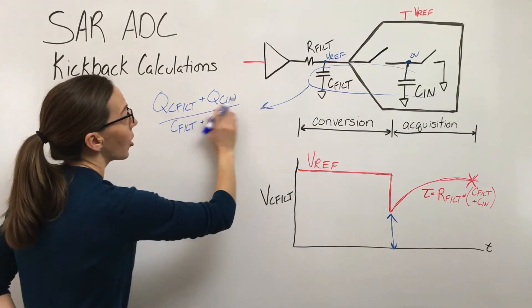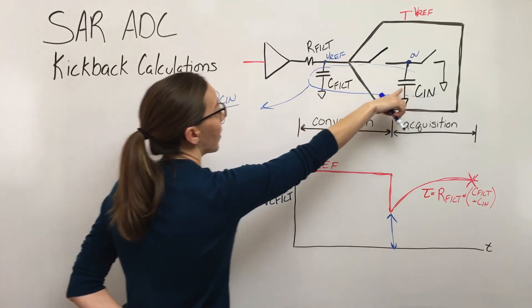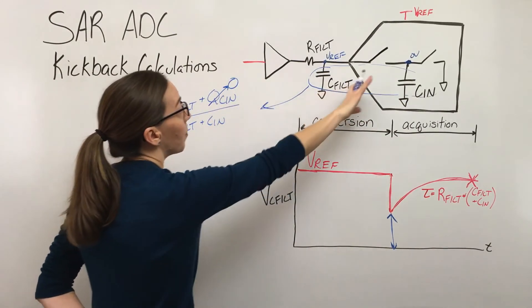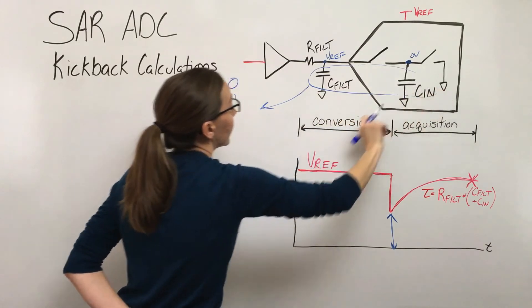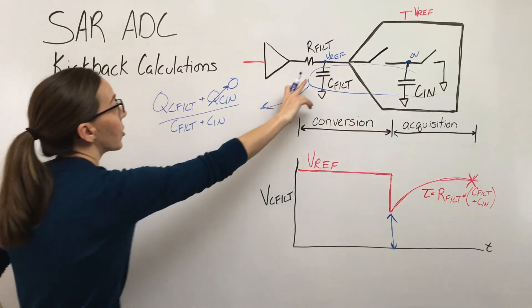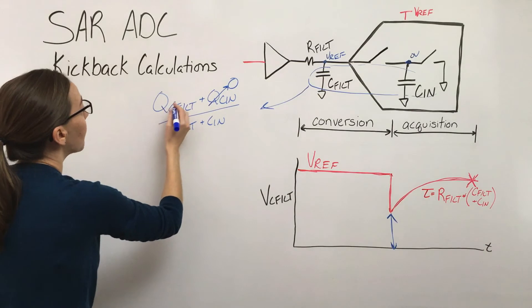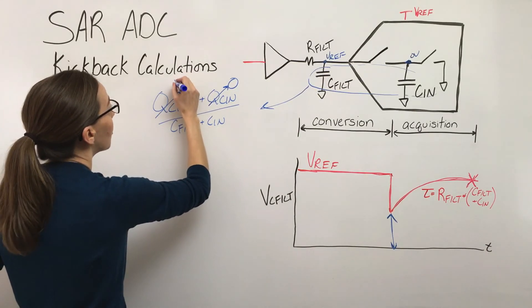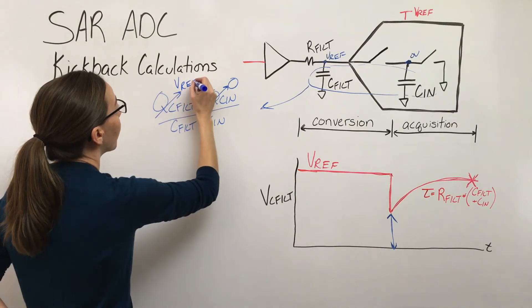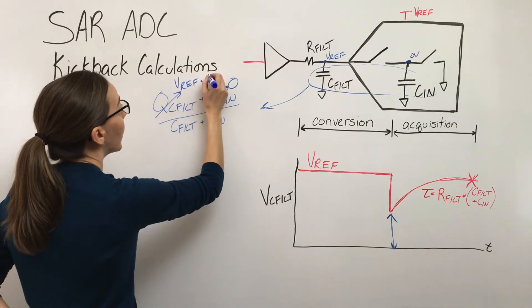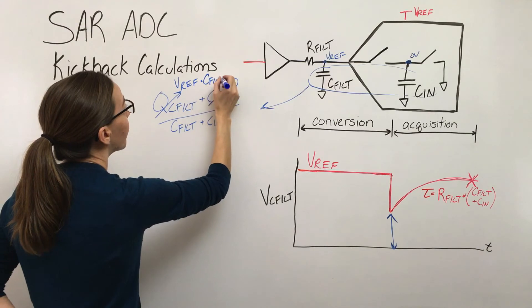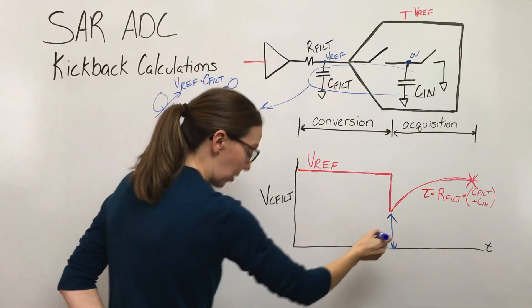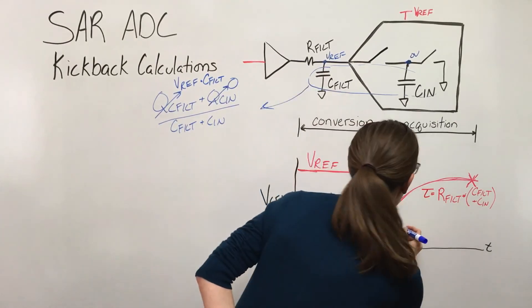This actually simplifies down. We know that the charge on that input sample cap - we're just going to assume that there's zero charge on it because of this grounding that occurs right there. So the charge on this capacitor is just the voltage, which we're going to assume is the reference voltage, times that filter capacitor. This is essentially our equation which gives us this value right here.